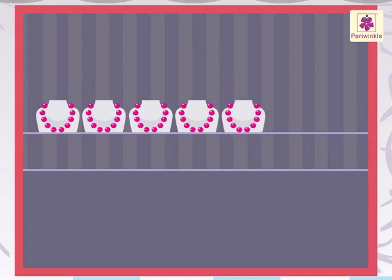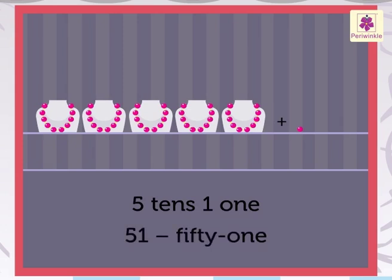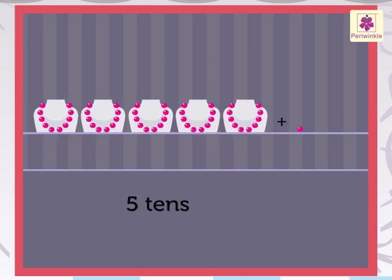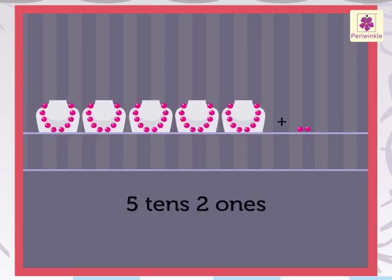Look, five tens and zero ones is 50. Five tens and one one is 51. Five tens and two ones is 52.